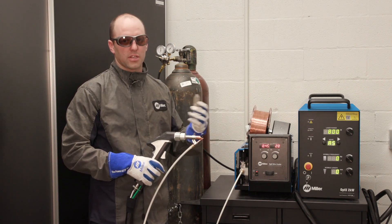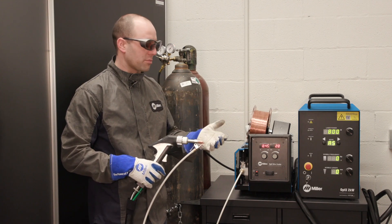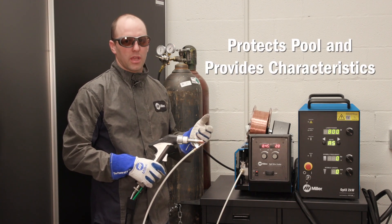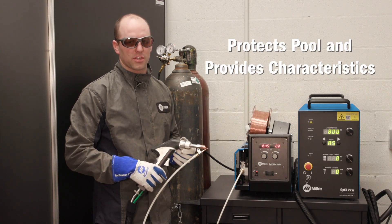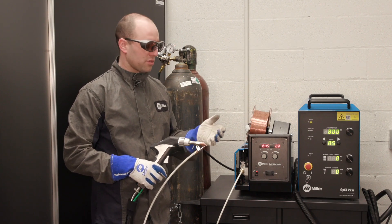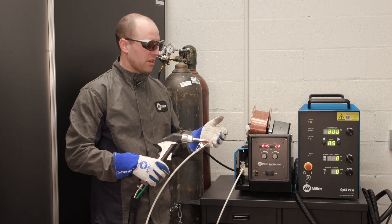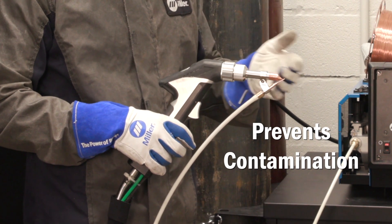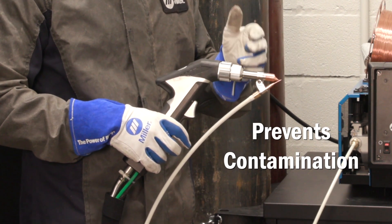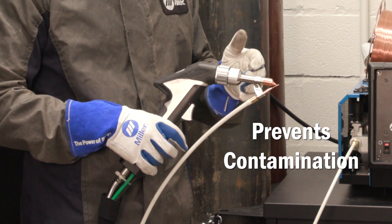The shielding gas does two things: one, it protects your welding pool and provides the welding characteristics you're looking for; and two, importantly, it prevents contamination or debris from coming up the barrel of the torch and accumulating on the lenses in the head of the torch.